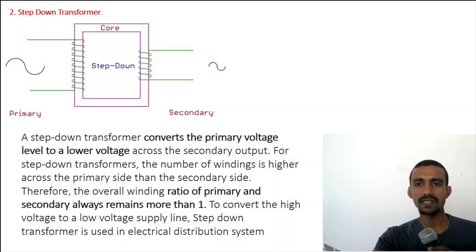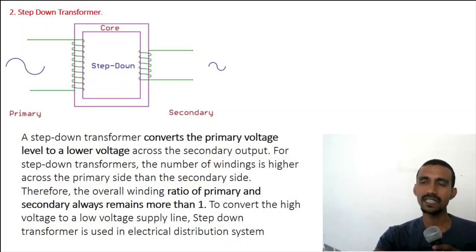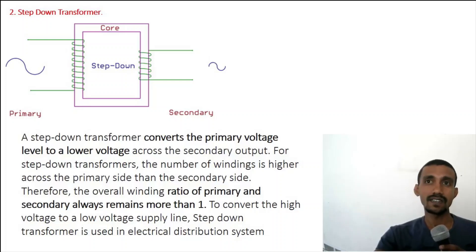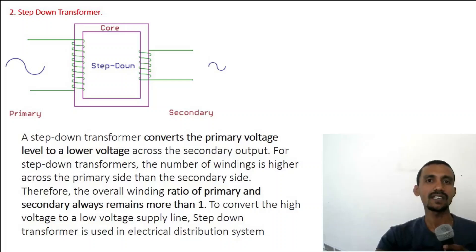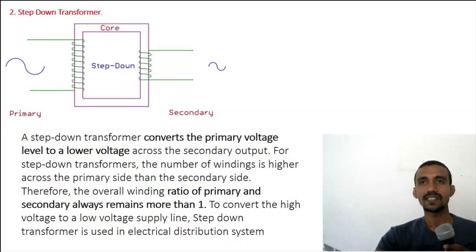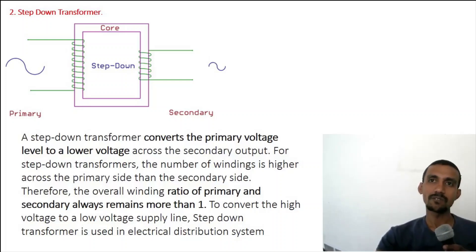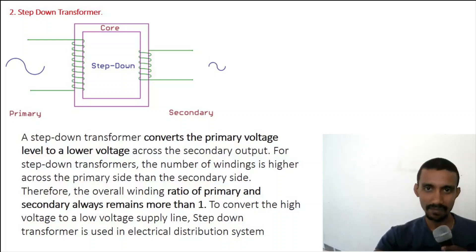The step-down transformer is used in the distribution system. From the grid, we step up the voltage for transmission, and then use a step-down transformer for direct application to machines and end users. All common devices use a step-down transformer to receive usable voltage.